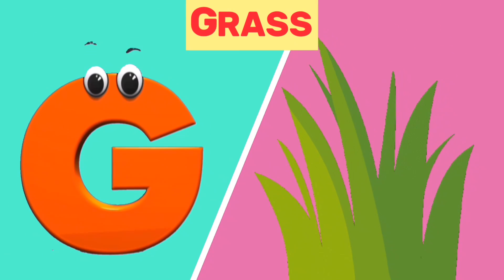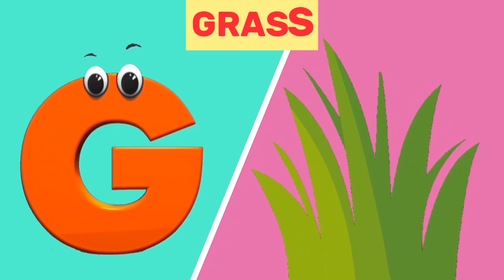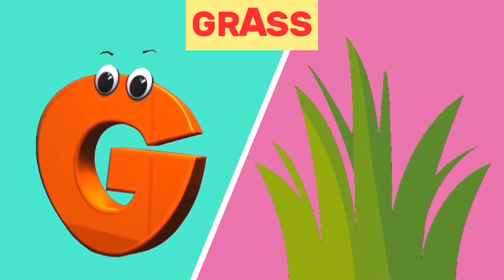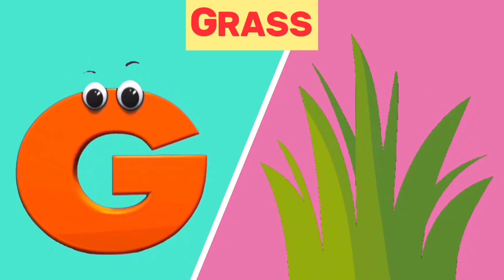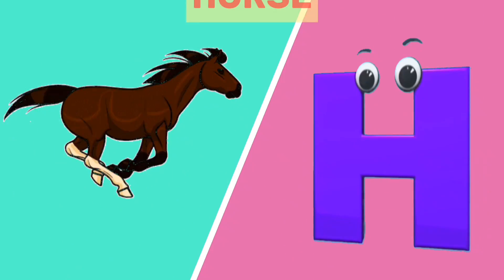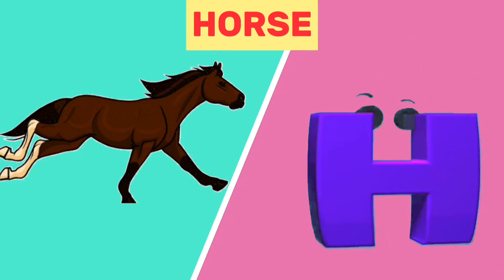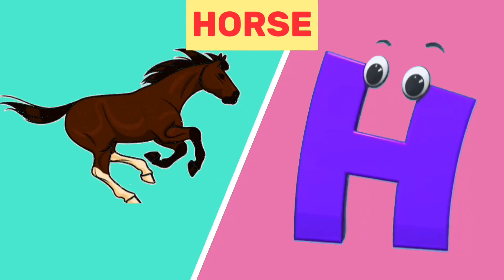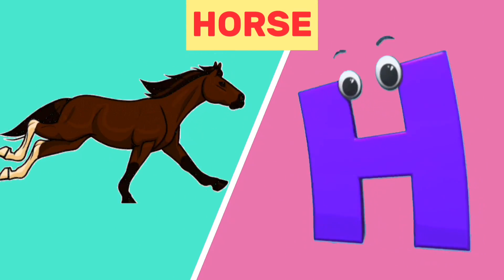G is for grass. G, g. Grass. H is for horse. H, h. Horse.